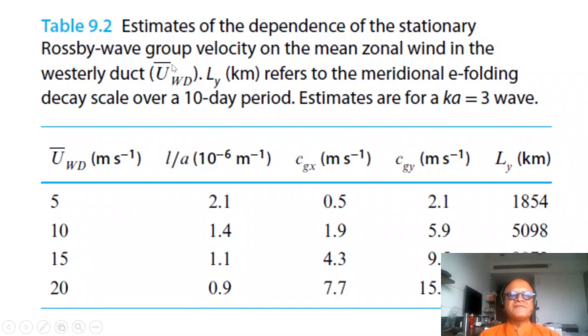Estimating the dependence of stationary Rossby wave group velocity on the mean zonal wind in the westerly duct, the Ly in kilometers refers to the meridional e-folding scale, the decay scale over a 10-day period. This is done for a perturbation at Ka equal 3 wave. You can think of it as arising from a breaking Rossby wave in the storm track or so. This is the basic state here: westerlies are 5, 10, 15, 20 meters per second.